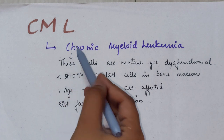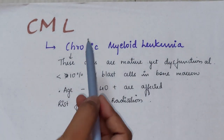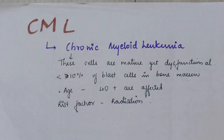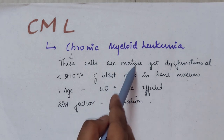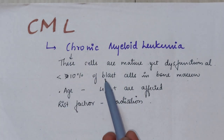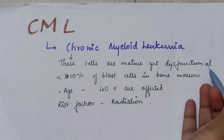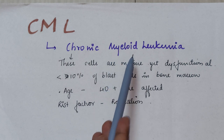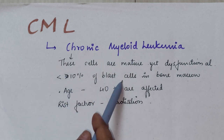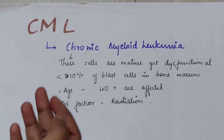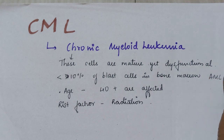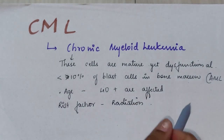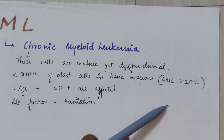CML is nothing but chronic myeloid leukemia. Whenever you hear the term chronic in leukemia, remember that in chronic leukemias, the cells are usually more mature compared to acute leukemia, but they are still dysfunctional — they have no functional value. The myeloid blast cells are less than 10% in bone marrow, whereas in acute myeloid leukemia, there was more than 20% of blast cells.